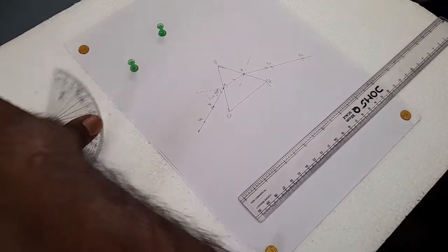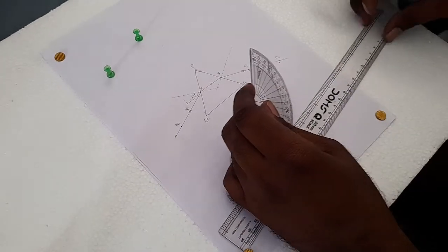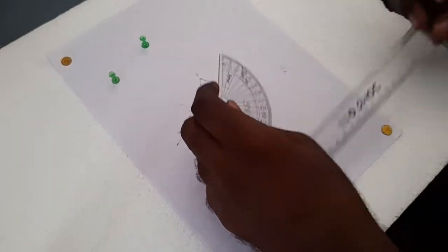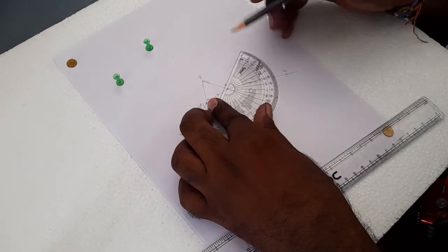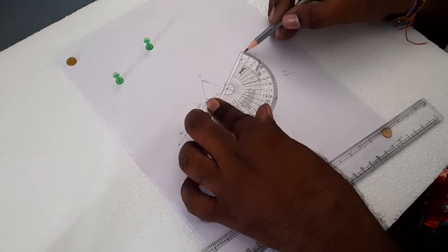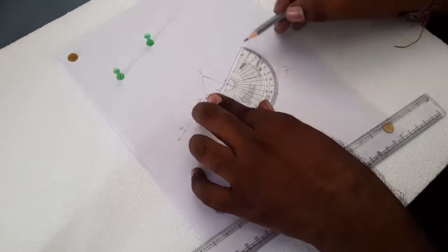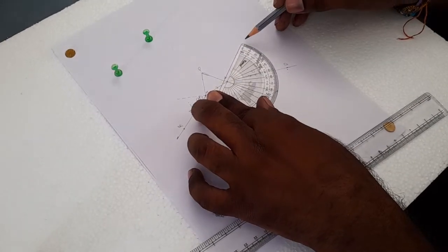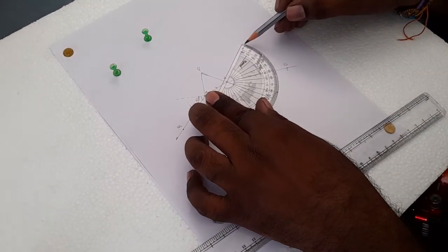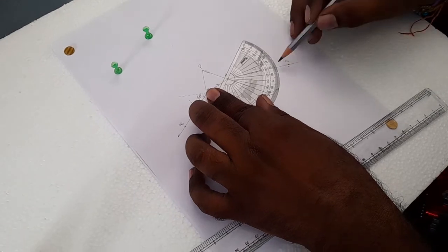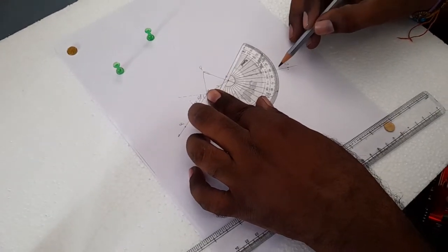Now we need to calculate the angle of deviation. Sorry, angle of emergent. With the help of 90 degrees which coincides with the PR, zero degrees coincides with the normal. So the angle of emergent, we found it as 50 degrees approximately.